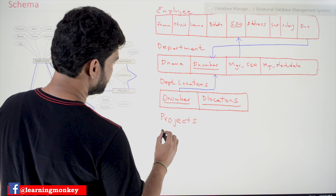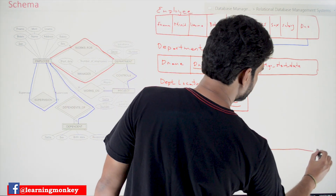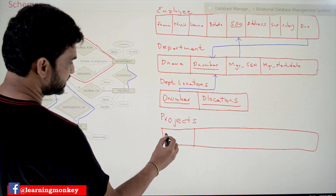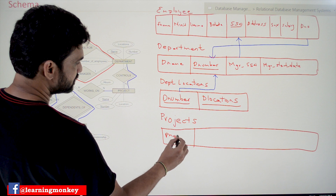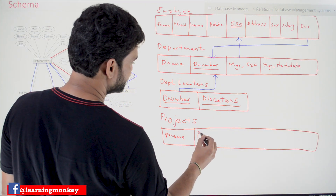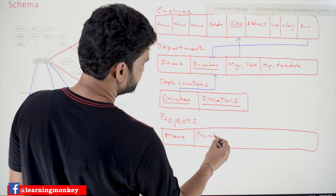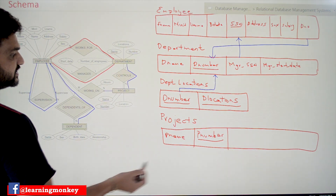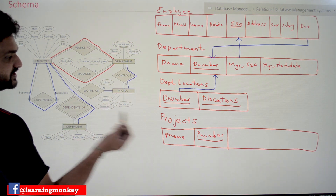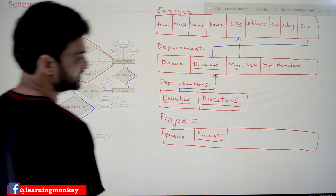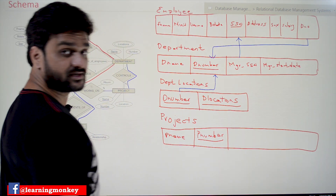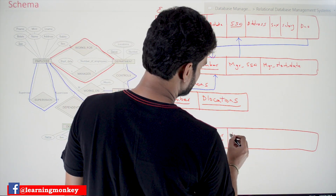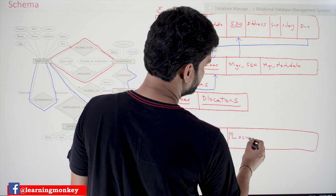The Projects table and its attributes will be: P name (project name), P number — which we will consider as the primary key — and P location.